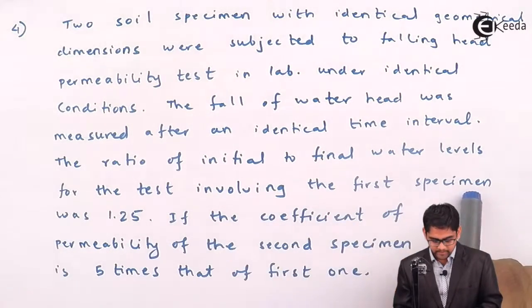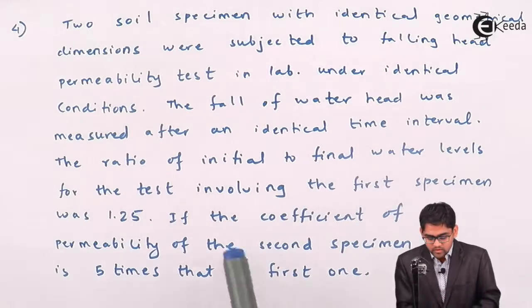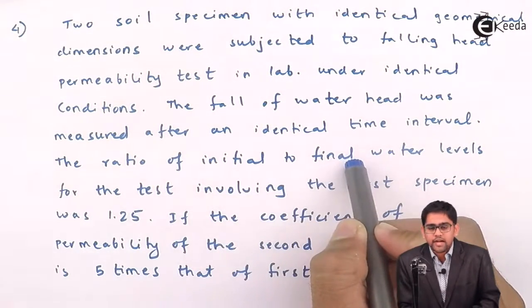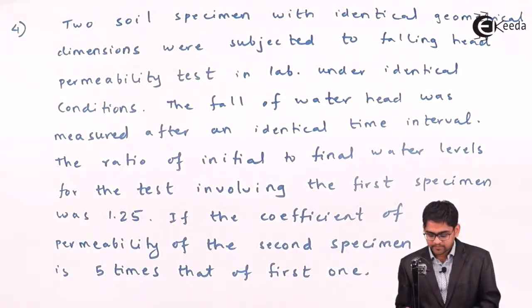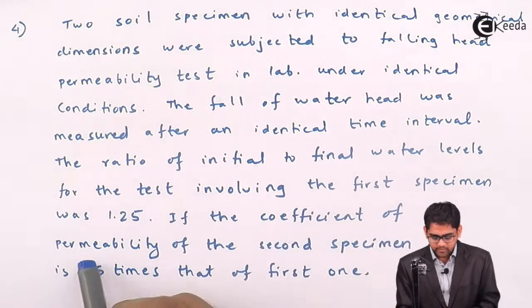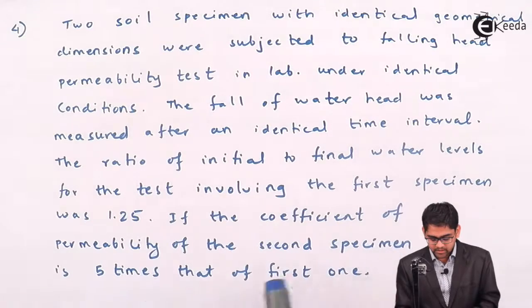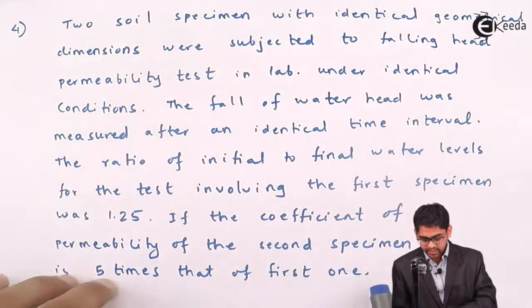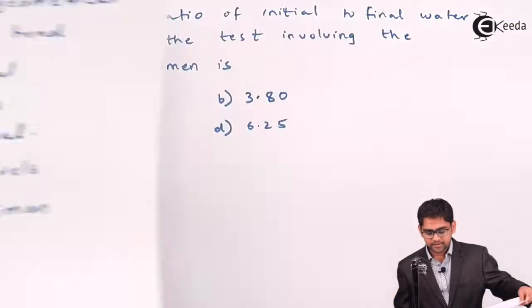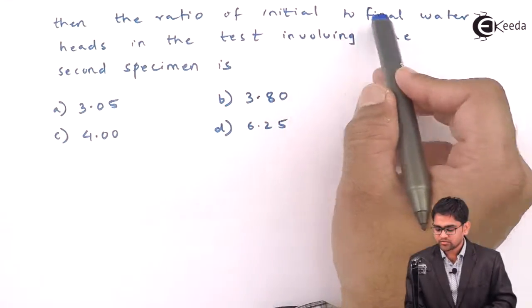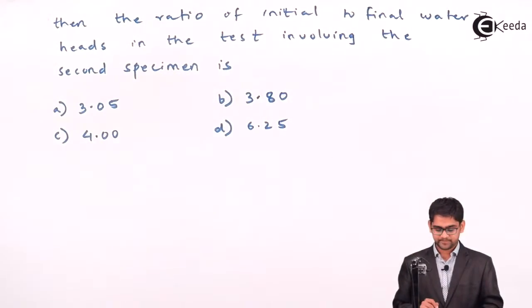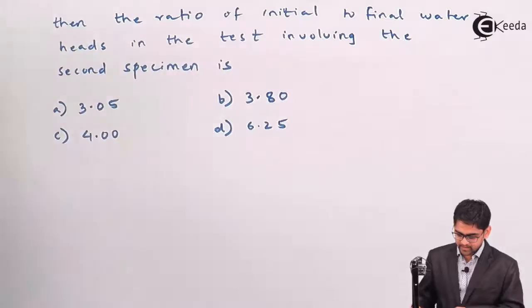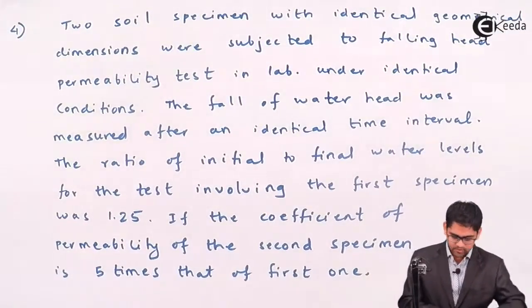The ratio of initial to final water levels for the first specimen — that is h1 to h2 — is given as 1.25. If the coefficient of permeability of the second specimen is five times that of the first one, we are asked to calculate the ratio of initial to final water heads for the second specimen.